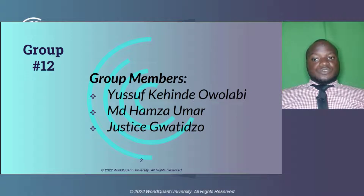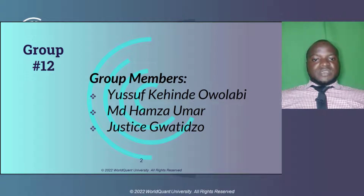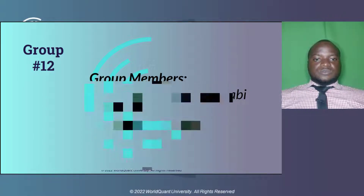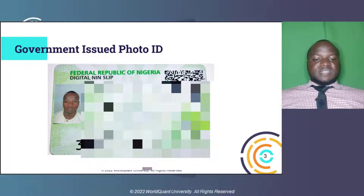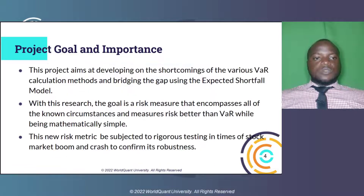My group is Group 12 and my group members are Yusuf Keen Dewolabi, Hamza Umar, and Jussi Guatizo. This is my government-issued photo ID, a national ID card, which I displayed in real time at the start of this recording.